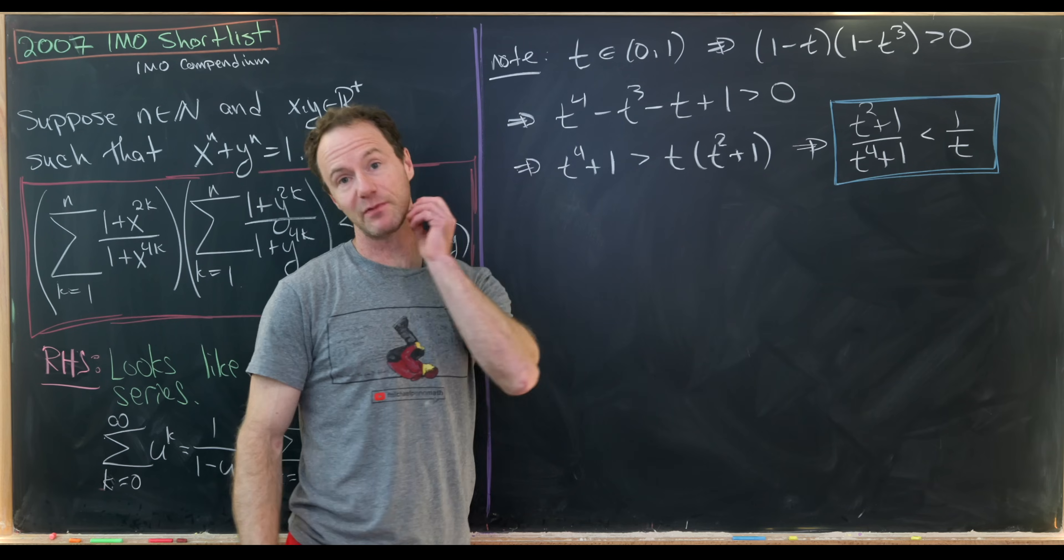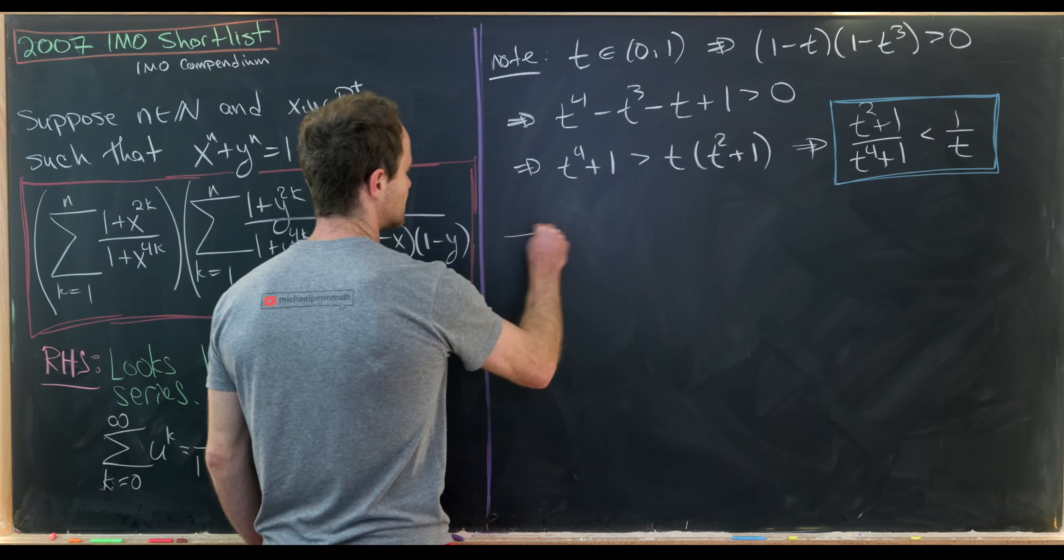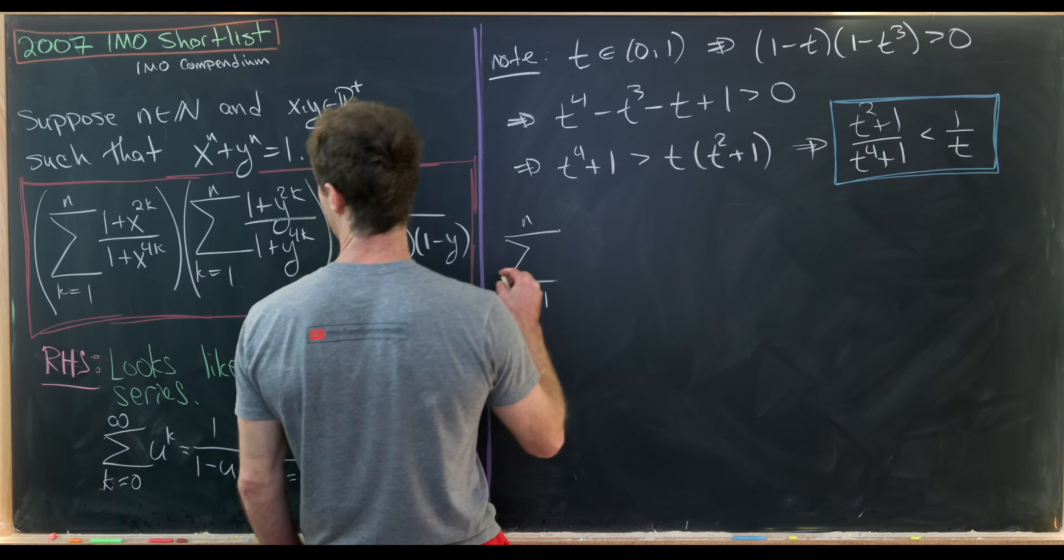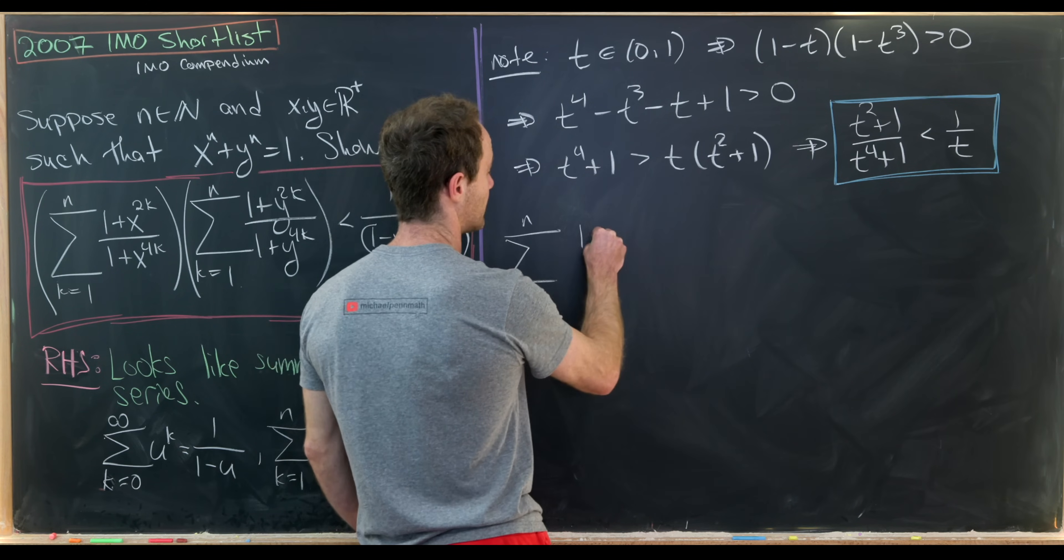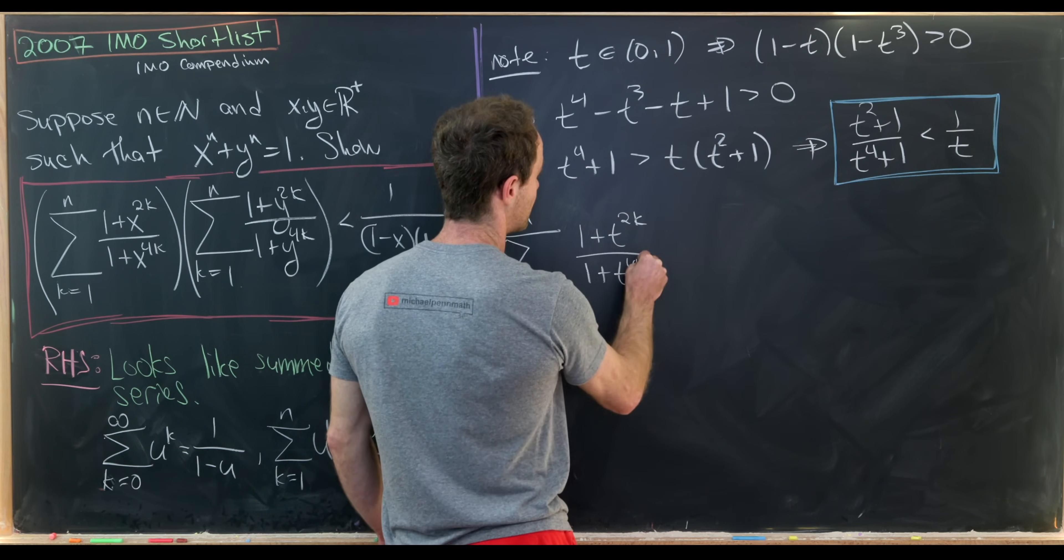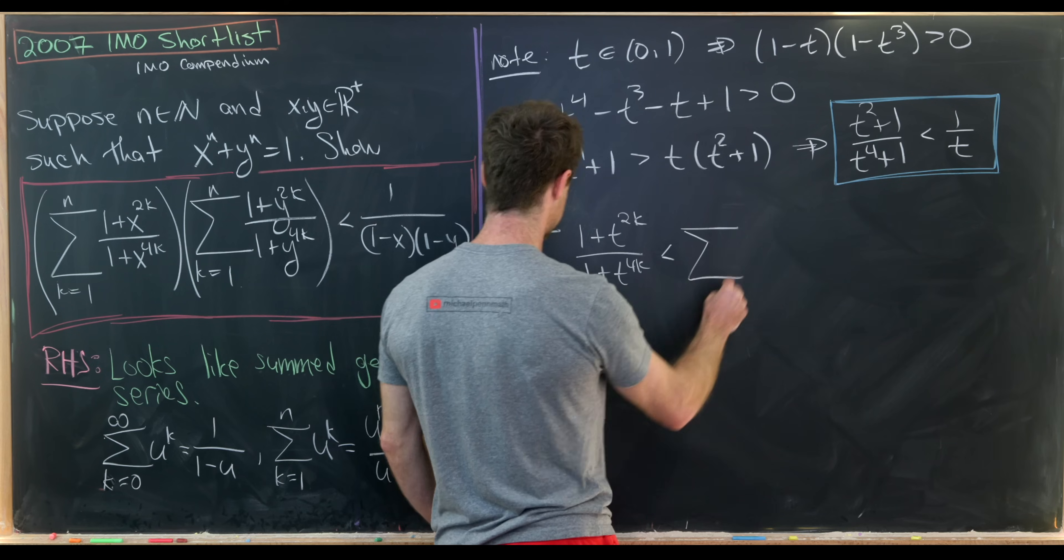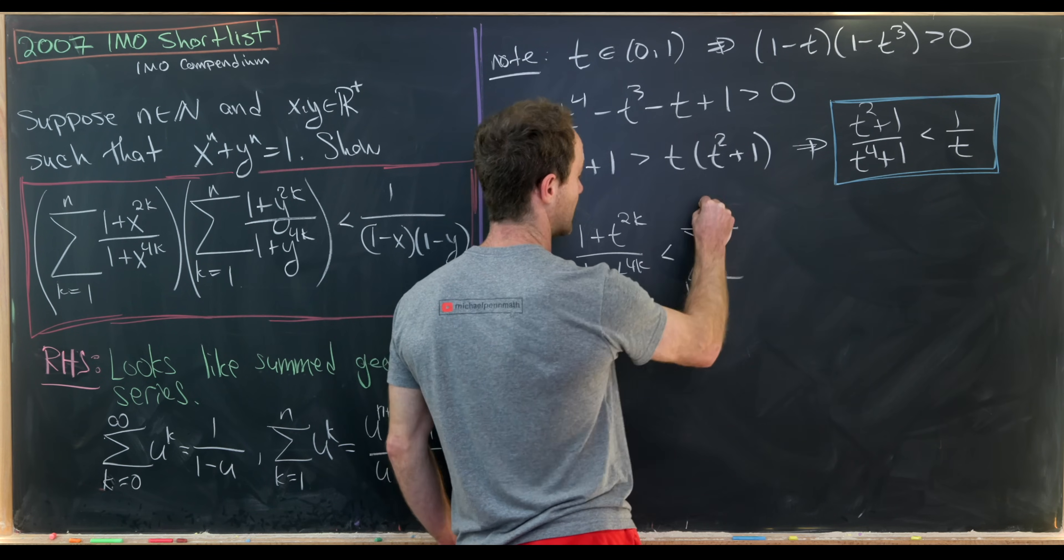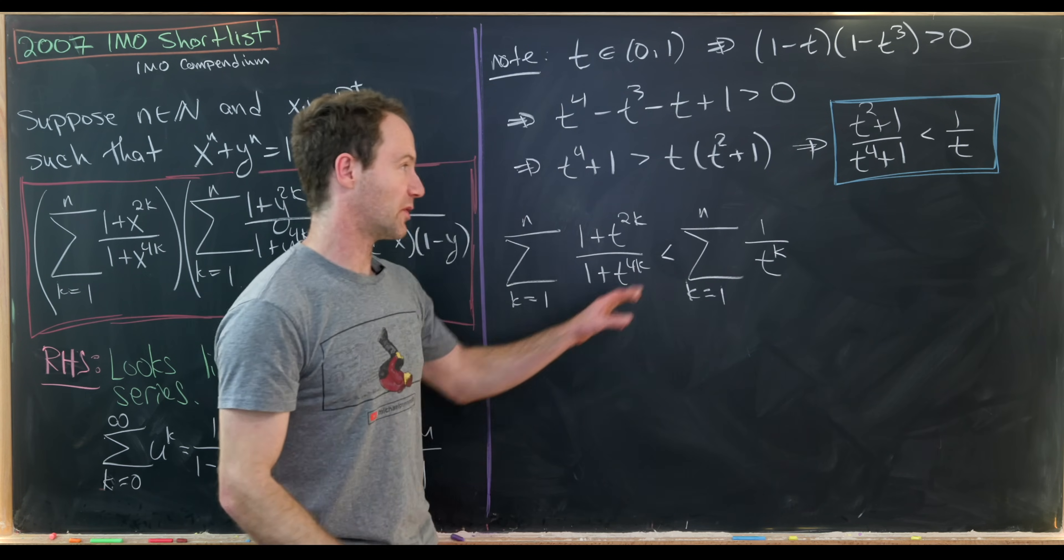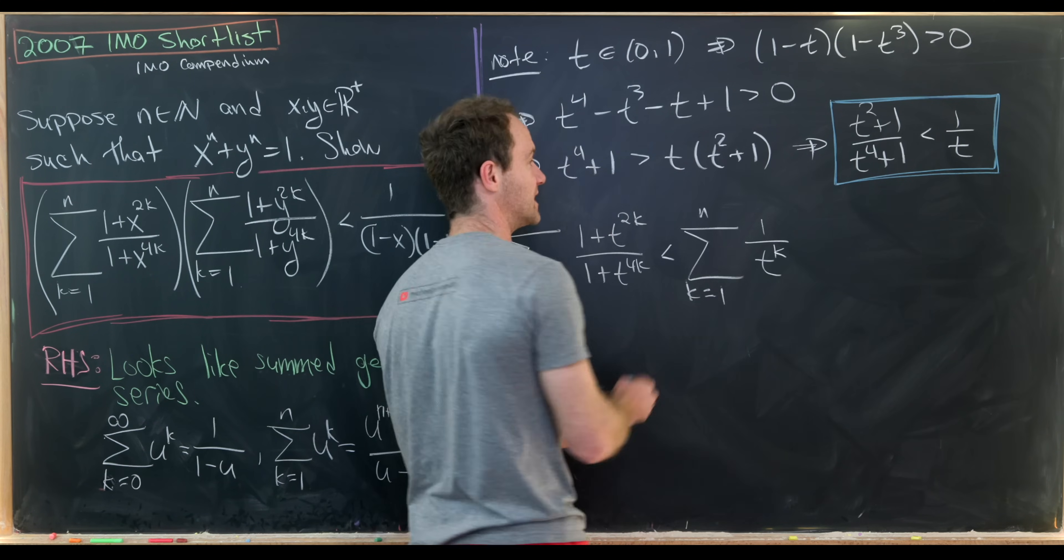Okay, so now let's maybe stick this type of object inside of our sum and see what we have. So we've got the sum as k goes from 1 to n of (1 plus t to the 2k) over (1 plus t to the 4k) is strictly less than the sum as k goes from 1 to n of 1 over t to the k power. Where I'm applying my blue inequality to every term from this sum.